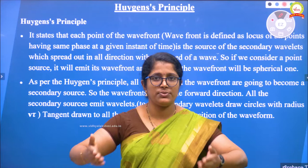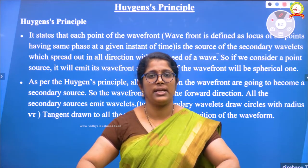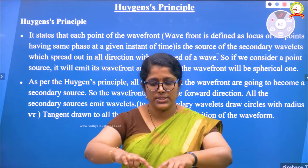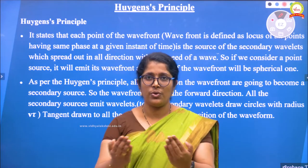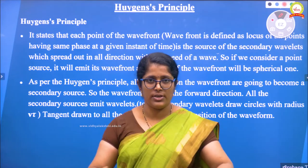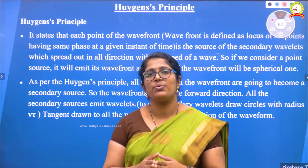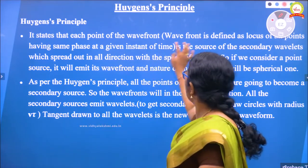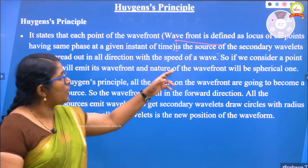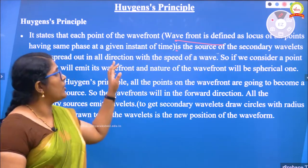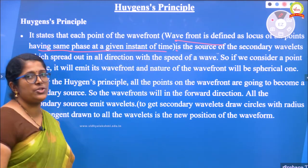If the points are in a trough, that means the displacement is negative. These will form another wavefront. So the group of excited points or depressed points actually forms a wavefront. Wavefront is defined as the locus of all points — locus means group — having the same phase at a given instant of time.